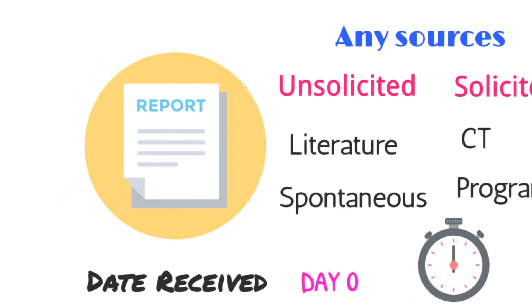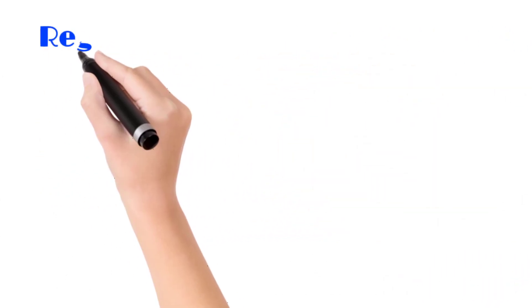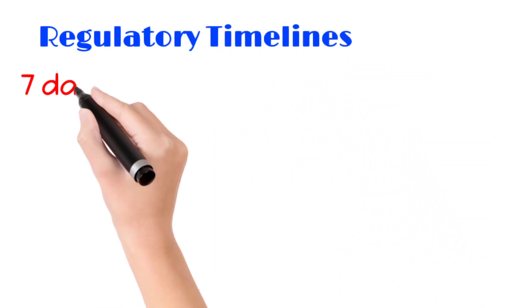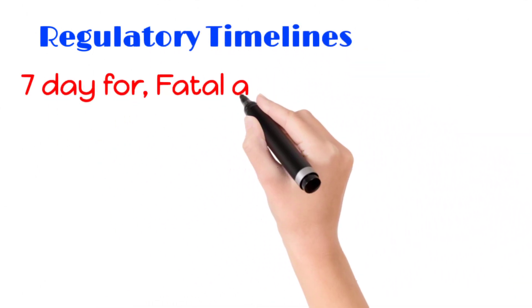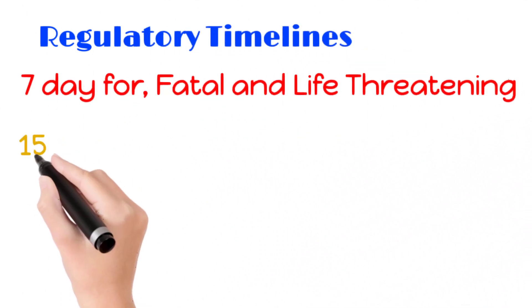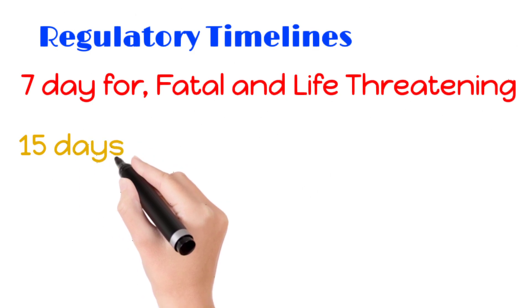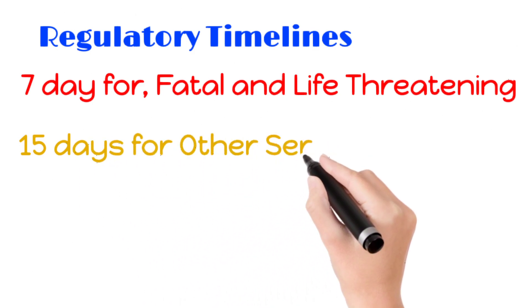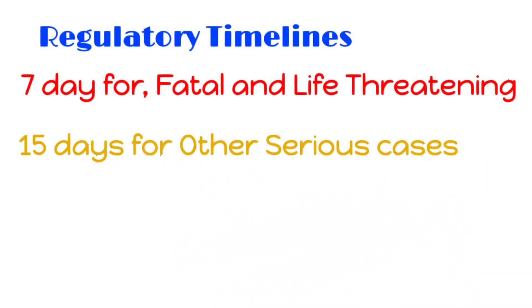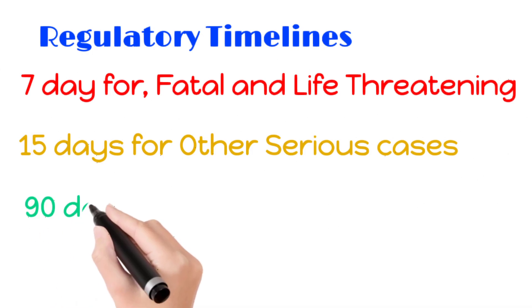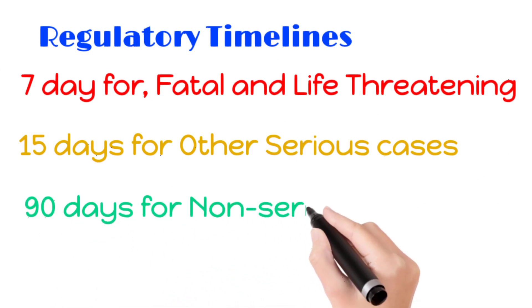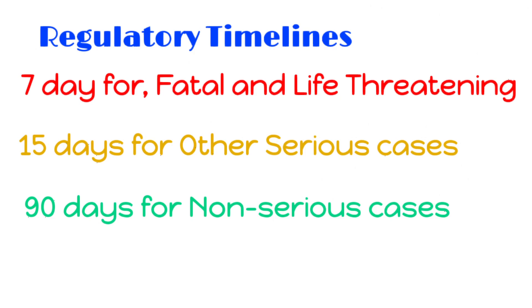To understand steps in case processing, we need to know what regulatory timelines are. There is a 7-day timeline for fatal and life-threatening cases, a 15-day timeline for other serious cases like those with seriousness of hospitalization, disability, etc., and a 90-day timeline for non-serious cases. This is the time frame in which the manufacturer of the drug needs to provide details of the report to the regulatory authority.